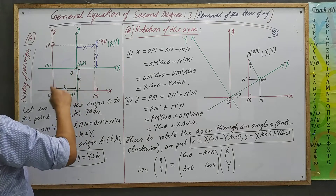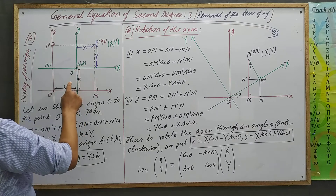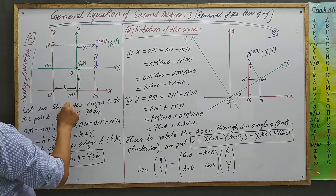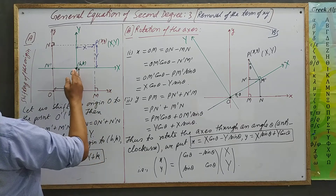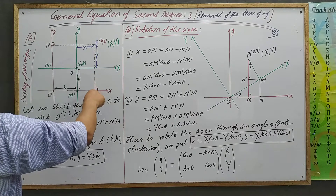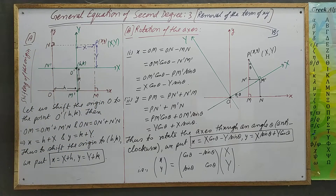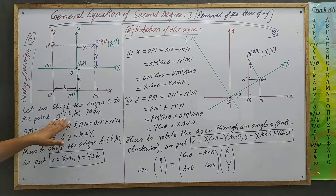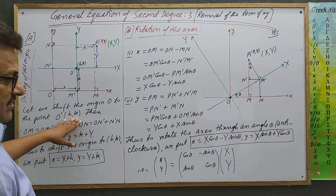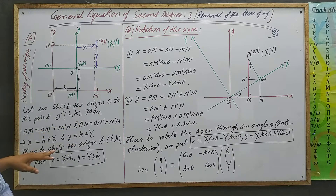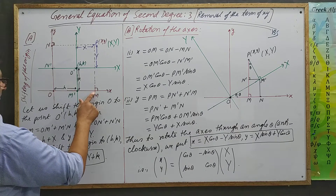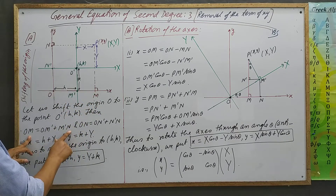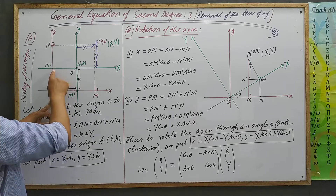If this point has coordinates (h, k) with respect to the old x-axis, then h is the distance of this point from the Y-axis, and k is the distance from the small x-axis. So from P we drop perpendiculars PM and PN. Let us shift the origin O to the point O', whose coordinates are (h, k) with respect to the old system. Then: OM = OM' + M'N, and ON = ON' + N'N.